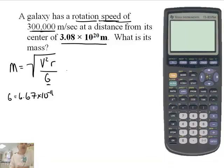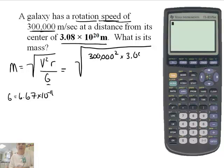So let's see here. What do I know? The velocity is 300,000. So I'm going to say square root, make a big line here, 300,000. And when you square it, you get really big numbers. Times r, which is 3.08 times 10 to the 20th. And we're going to divide it by 6.67 times 10 to the minus 11th.